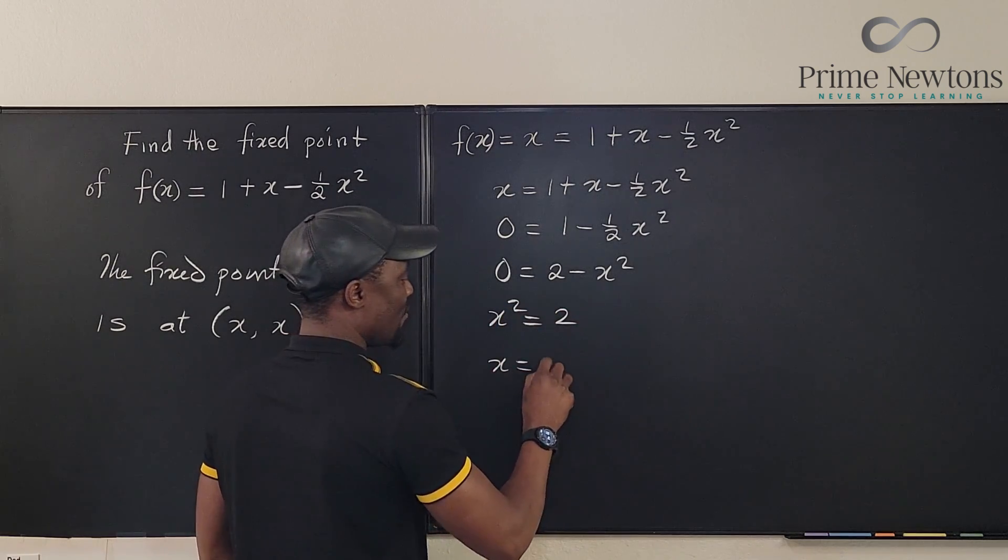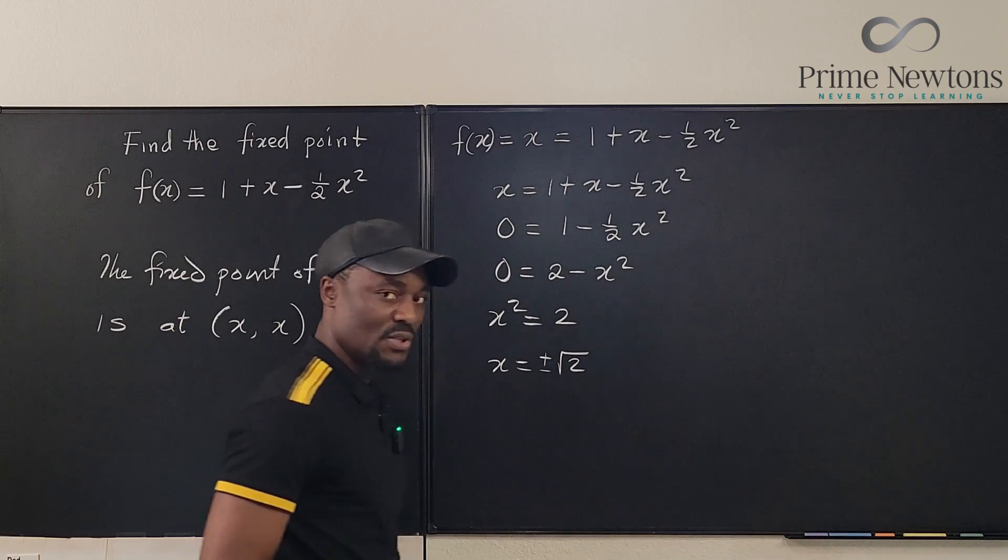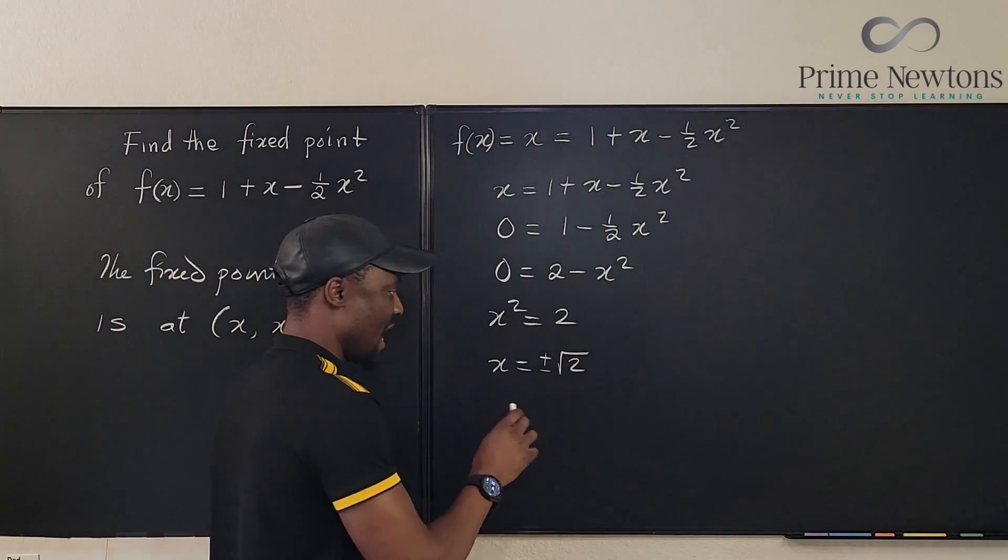And x will be plus or minus the square root of 2. So our fixed point will be when x equals square root of 2.